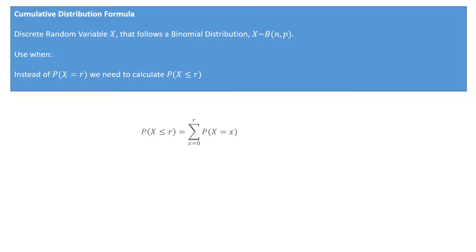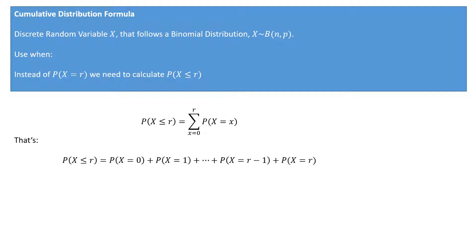The formula looks rather complicated, but all it's really saying is that the probability of X being less than or equal to some value r is equal to the sum of the following probabilities. For instance, the probability of X being less than or equal to three equals the probability of X equals zero, plus X equals one, plus X equals two, plus X equals three.